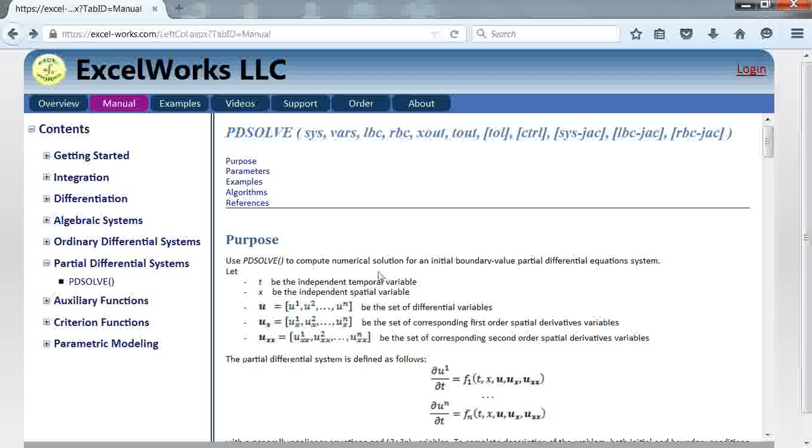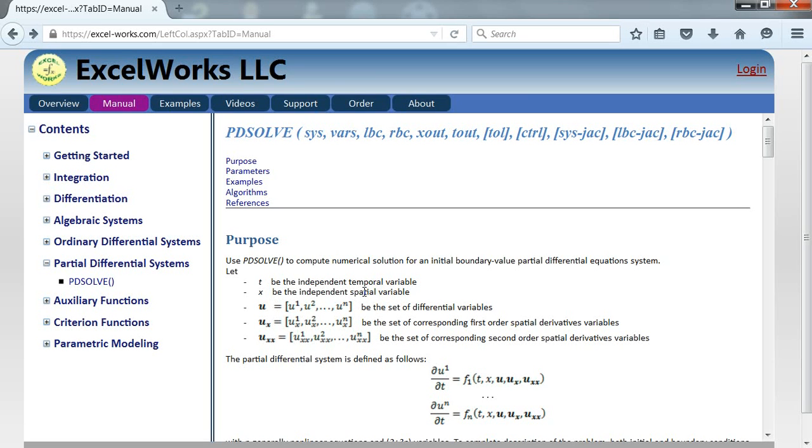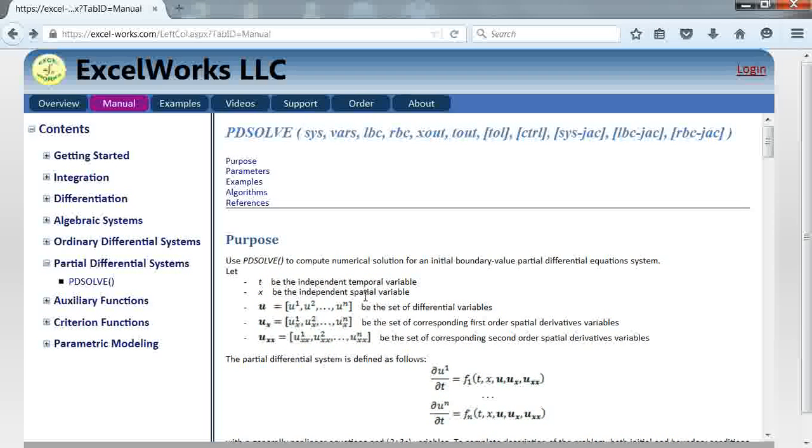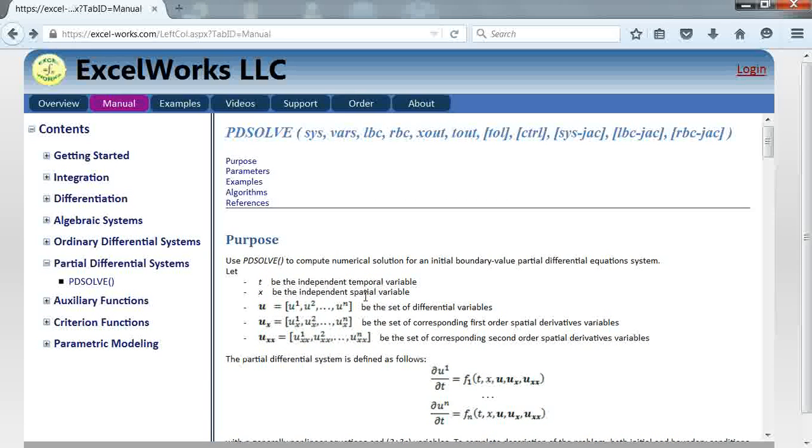As you see here, we have two independent variables for a partial differential equation system, which is time and space. So there are multiple ways you can lay out the solution. Let me, in fact, explain the layout before we go to Excel so it becomes clearer.